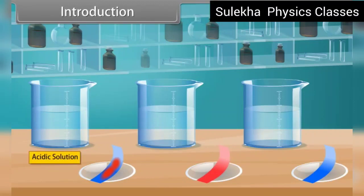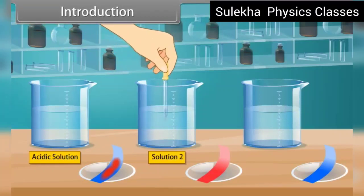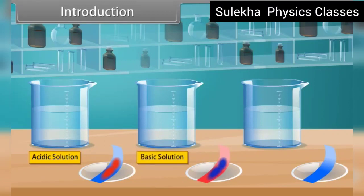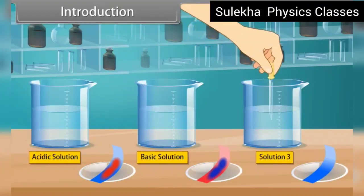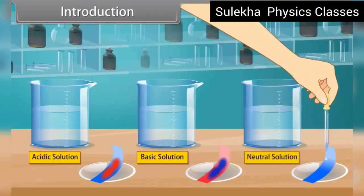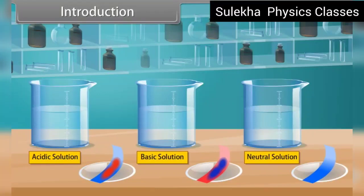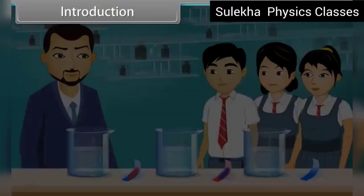Next, put a drop of solution 2 on the red litmus paper. It turns into blue. It shows basic behavior. Finally, we test for solution 3. The color is not changing. It shows that this solution is neutral, and we can say that the solution is at equilibrium.